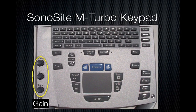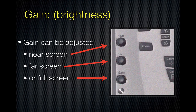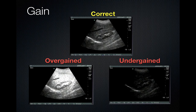Gain is brightness. The buttons to adjust gain are typically located to the left of the Sonosite M-Turbo keypad. Gain can be adjusted in the near field, the far field, or the full screen all at once. Here are examples of correct gain and incorrect gain. With correct gain, structures are clearly delineated from one another — the cortex of the kidney is slightly darker than the parenchyma of the liver. An over-gained picture appears snowy and detail is lost. Under-gained pictures are too dark, and one cannot discern details or differentiation between structures.